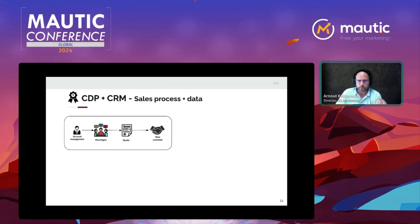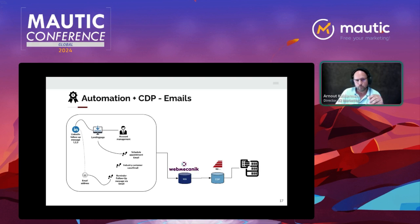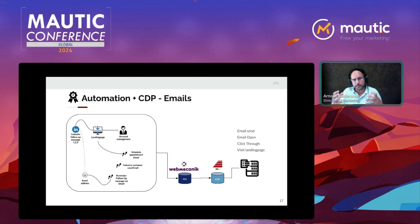For the email part of the process — getting a person to the landing page — we use Web Mechanic's Mautic version and add that data to the K2 CDP. Think: email sent, email opened, click-through, landing page visit. Throughout this whole process we collect data from different systems and bring them together in the CDP so we always have insight into how the total journey is going and can see where conversion is good and where it needs optimization.